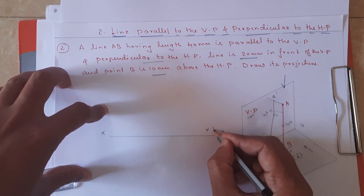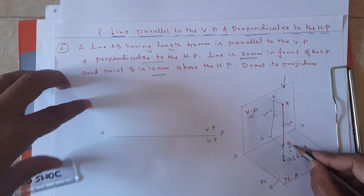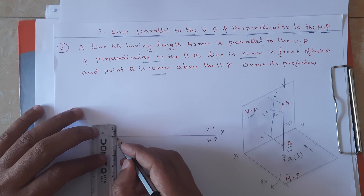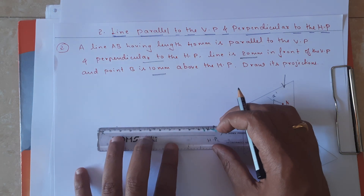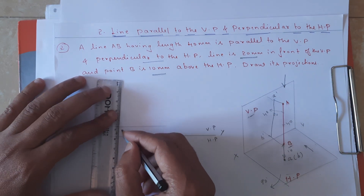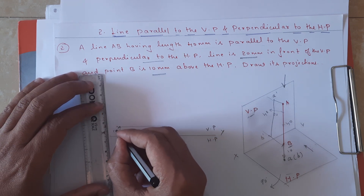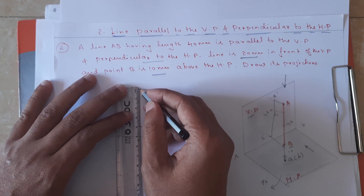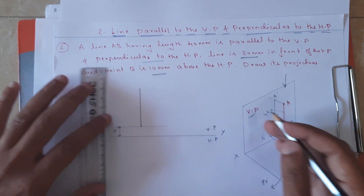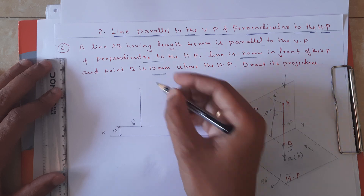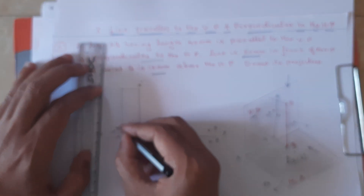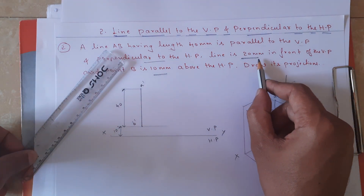The vertical plane is above XY and the horizontal plane is below. Since point B is 10mm above HP, I take a dimension of 10mm from the XY line and draw a reference line. I locate end point b' and draw a line of 40mm — getting the true length in the front view. So b' is at one end and a' is at the other, giving a dimension of 40mm for the front view.